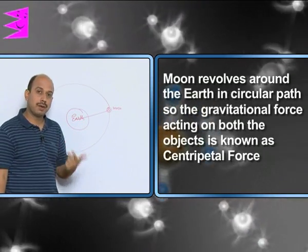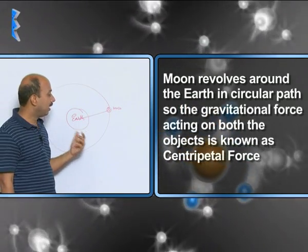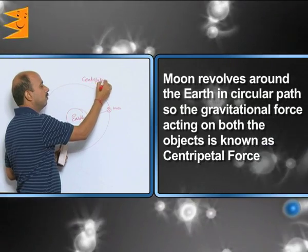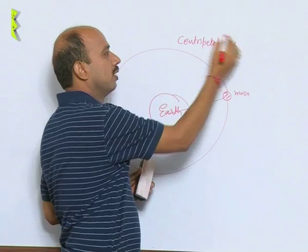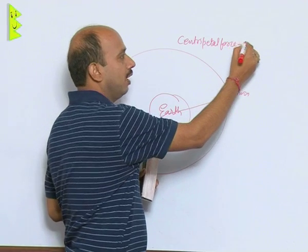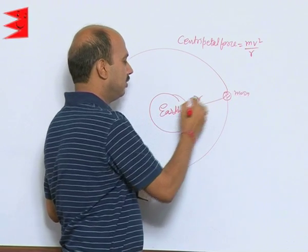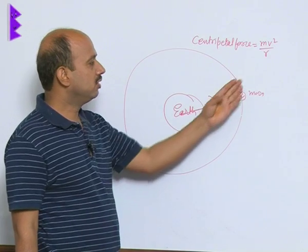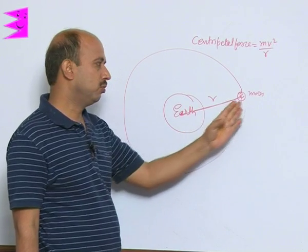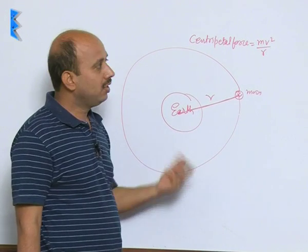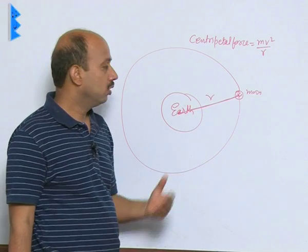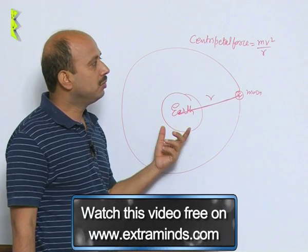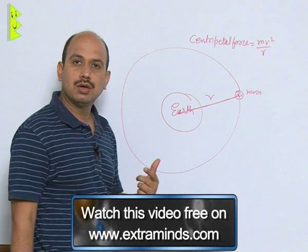Whenever any object moves in a circular path, it has centripetal force. The centripetal force formula is mv²/r, where r is the distance between the centres of the two objects — in this case, the Moon and Earth. The centripetal force keeping the Moon in orbit comes entirely from the gravitational force acting between the Moon and Earth, which is why the Moon keeps revolving around the Earth.